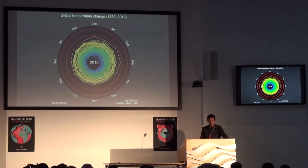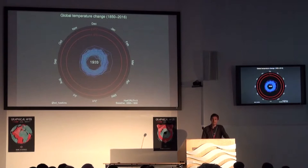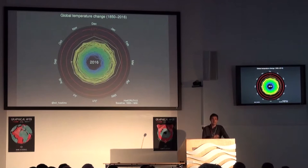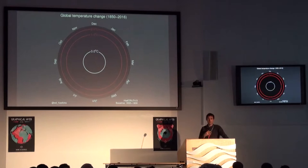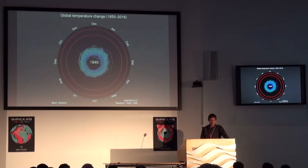I was quite surprised by what happened to this diagram — it went quite viral. It was shared millions of times on Facebook and social media. It seemed to appeal to non-scientists. Various scientists I spoke to didn't quite understand why it had gone viral, but apparently it resonated with people who weren't scientists. They seemed to understand this way of presenting the data far more simply than a normal line graph. It turned out that this spiral version seemed to help communicate the data in an effective way to the public.